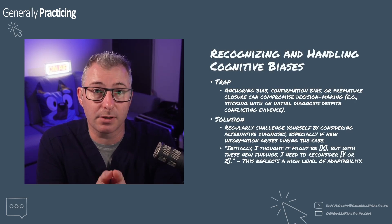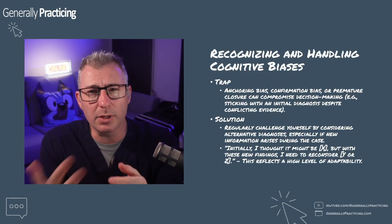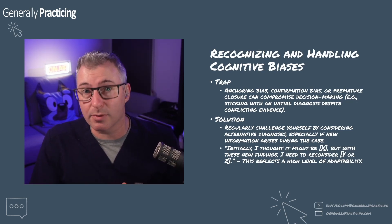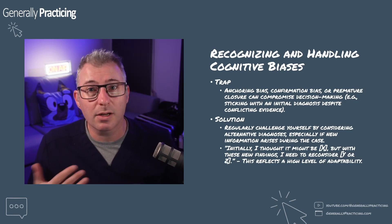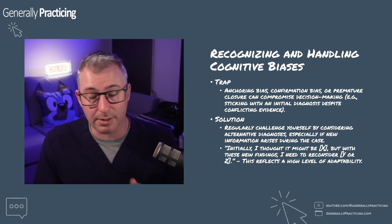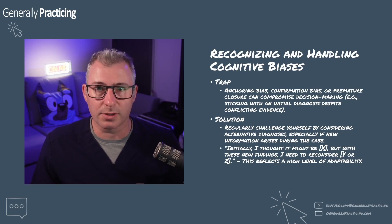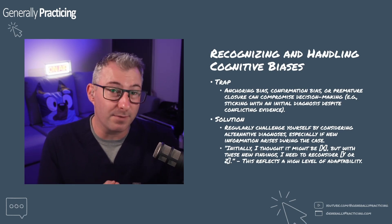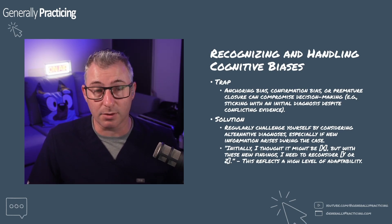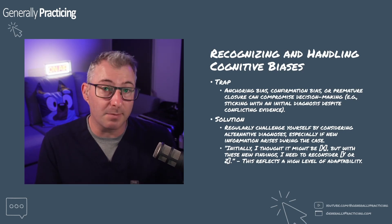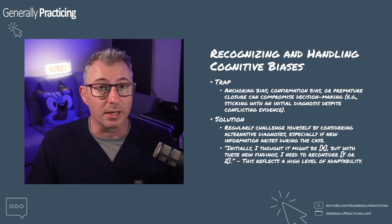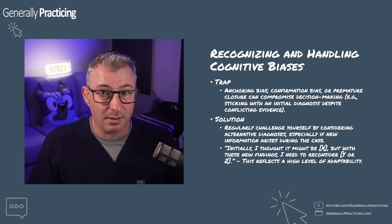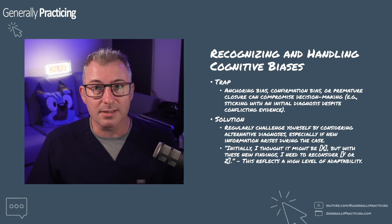Try to think about what your biases are, because we're all going to experience some of these. As humans we can experience anchoring bias, confirmation bias, or premature closure, which can compromise our decision making. Challenge yourself by considering alternative diagnoses, especially if new information arises during the case. You might think you're heading down one pathway, and then they give a pertinent bit of information that means you need to derail where you thought this was going. Verbalize it: 'Initially I thought this might be X, but with these new findings I actually need to reconsider that — Y or Z.'